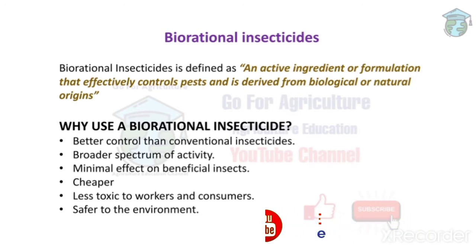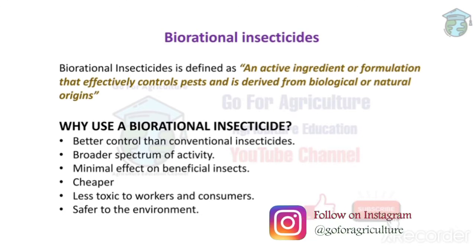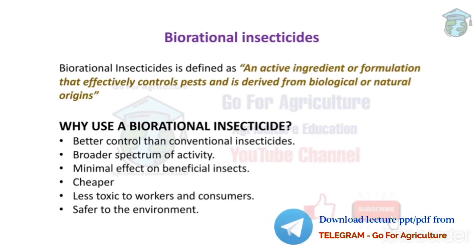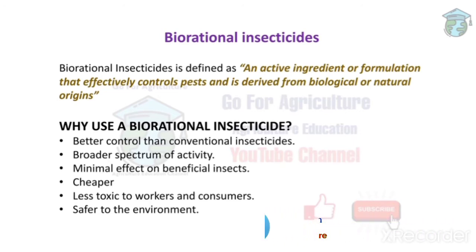The active ingredient such as neem oil is combined with a good formulation to prepare the final product. The inactive form refers to the additional formulation components. So bio-rational pesticides consist of an active ingredient plus formulation that effectively controls the pest. These can be biologically extracted from natural sources like neem.